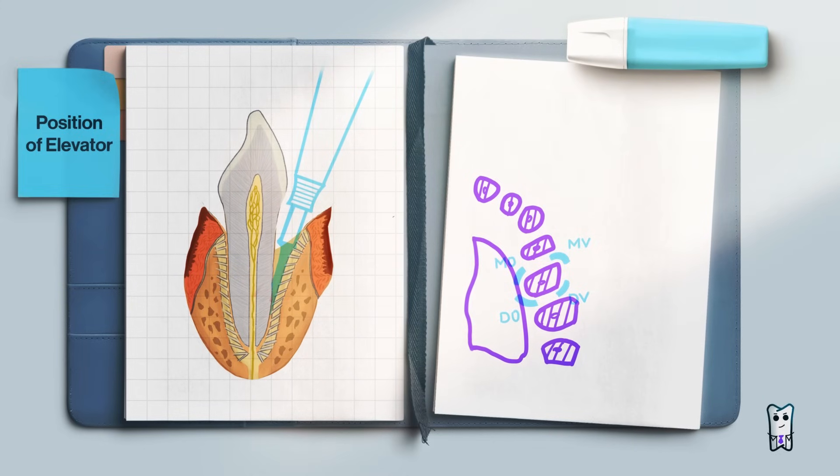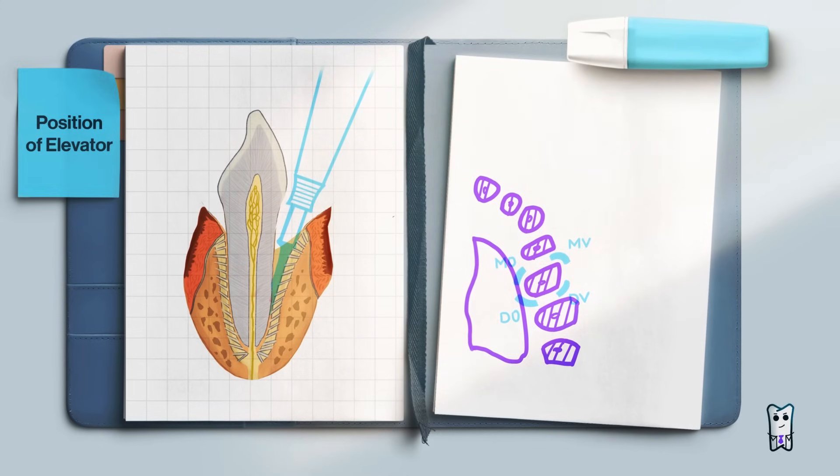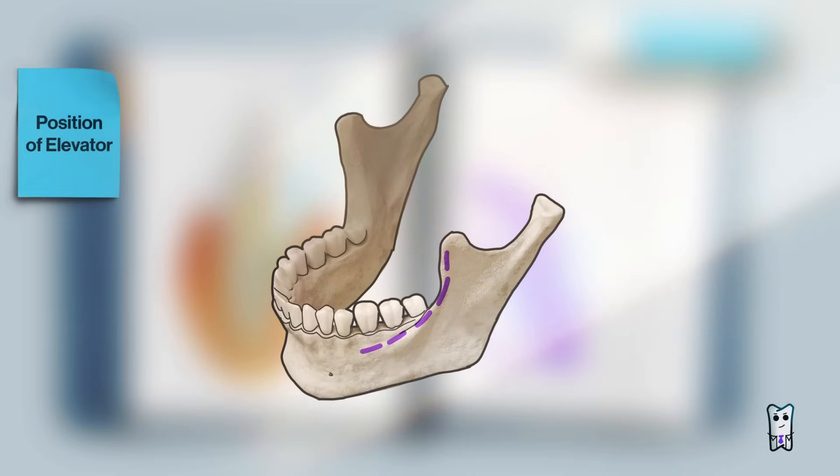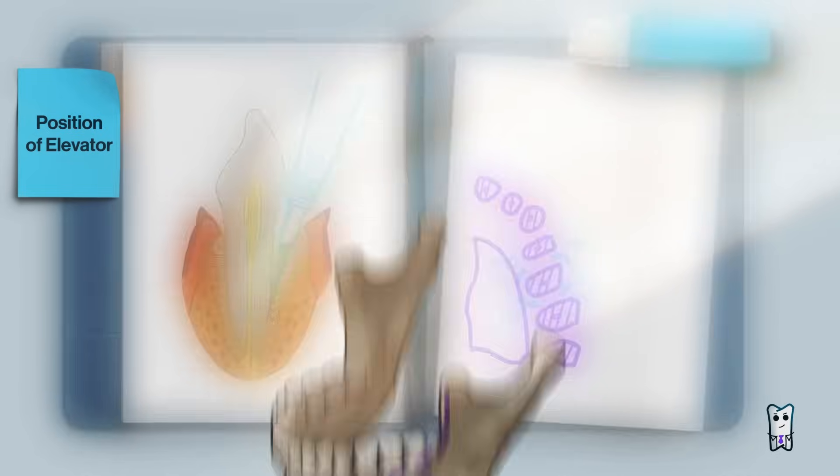Of course there are exceptions, such as the posterior region of the mandible. Vestibularly to the teeth in this area is the external oblique line. You know well that this structure is made of thick cortical bone and we can use it for fulcrum.